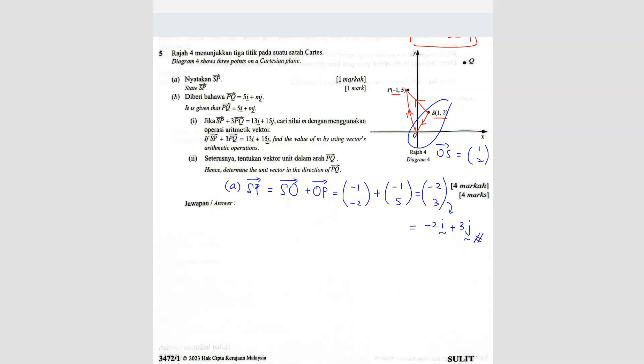Question B. It is given that, so they gave you the PQ vector here. If SP, so they gave another vector here. They gave you an equation here. SP plus 3PQ equals to this. Find the value of M by using the vector arithmetic operation.